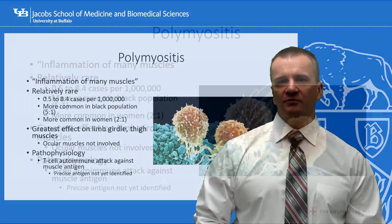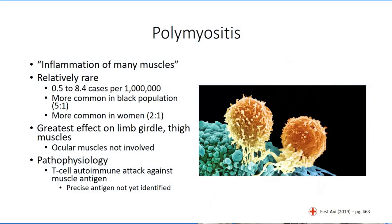The term polymyositis provides a general description of the patient presentation pattern involving inflammation to and weakness of a number of large muscle groups, typically involving the shoulder and hip girdle musculature. This is why it is not uncommon for initial workups to focus on limb-girdle muscular dystrophy as a likely diagnosis. The incident rate is fairly rare, affecting only about a half dozen individuals in a million.